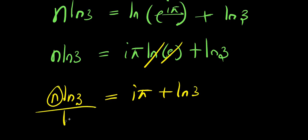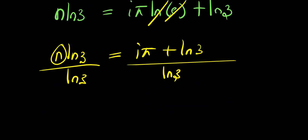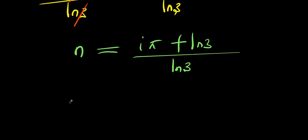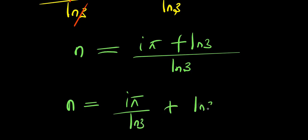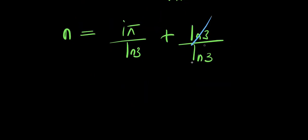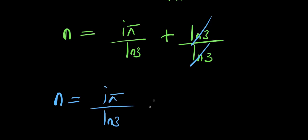From here, natural log of e to the power of i times pi simplifies to i times pi. So n times natural log of 3 equals i times pi plus natural log of 3. Dividing both sides by natural log of 3, the natural log of 3 terms cancel, giving n equals i times pi divided by natural log of 3 plus 1.